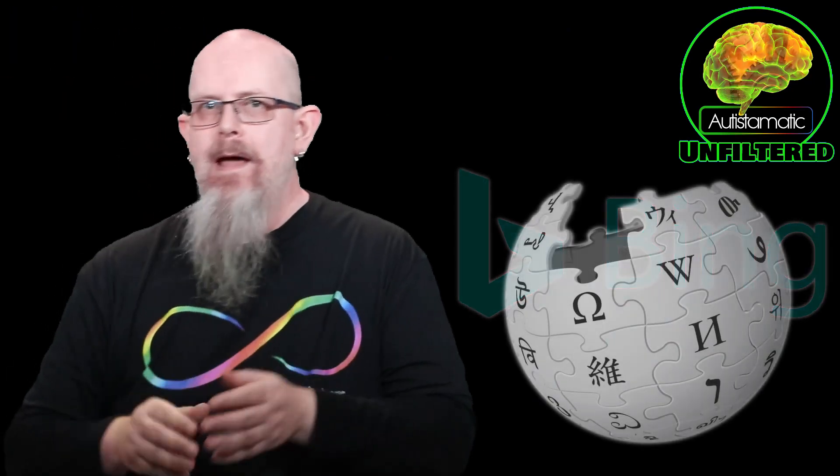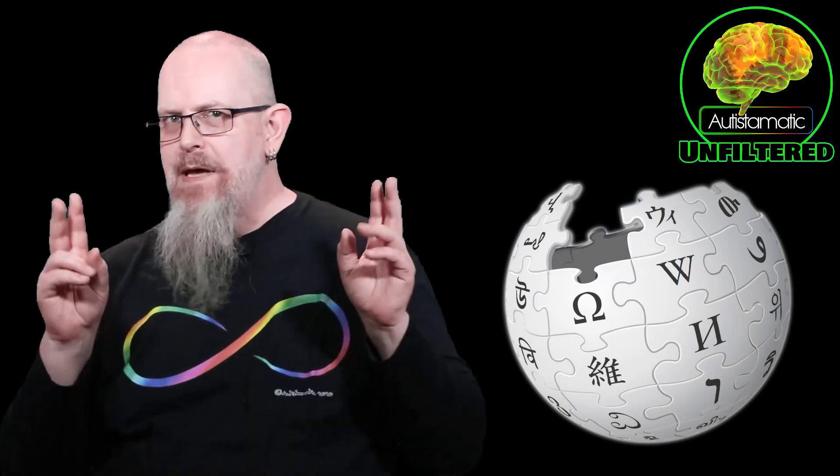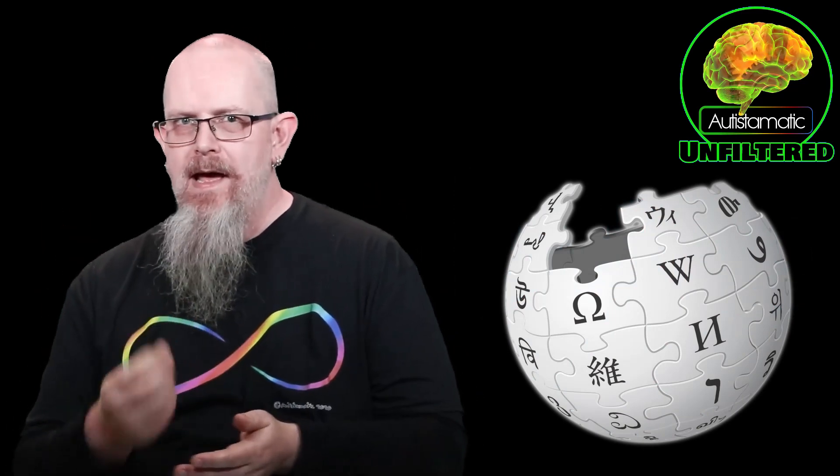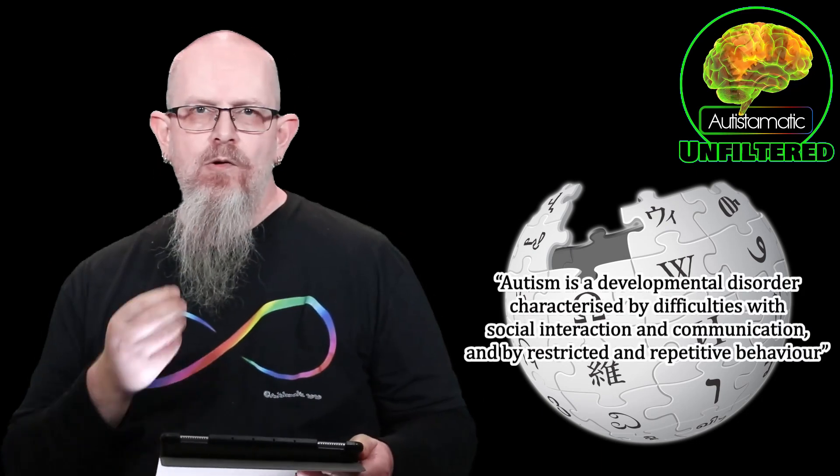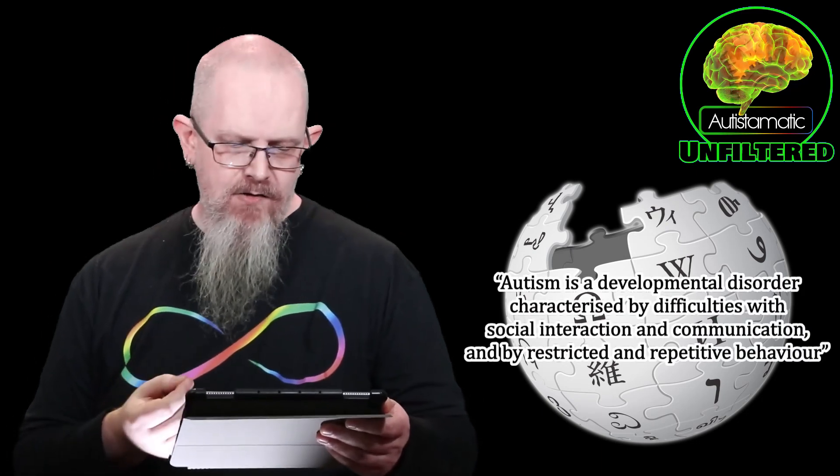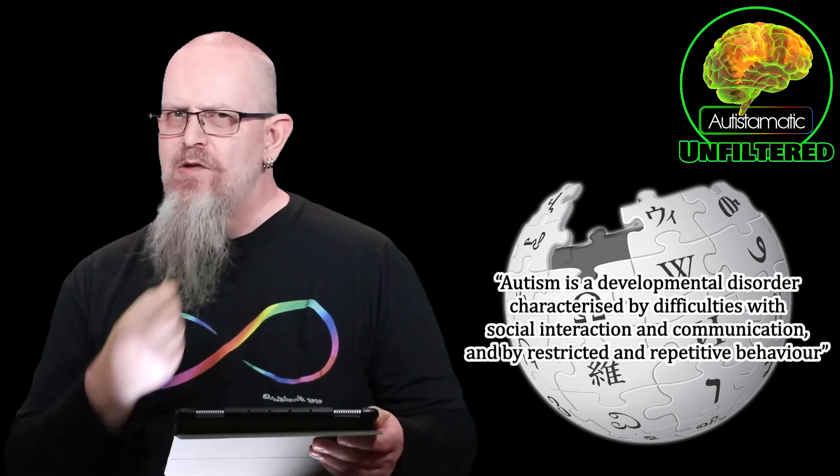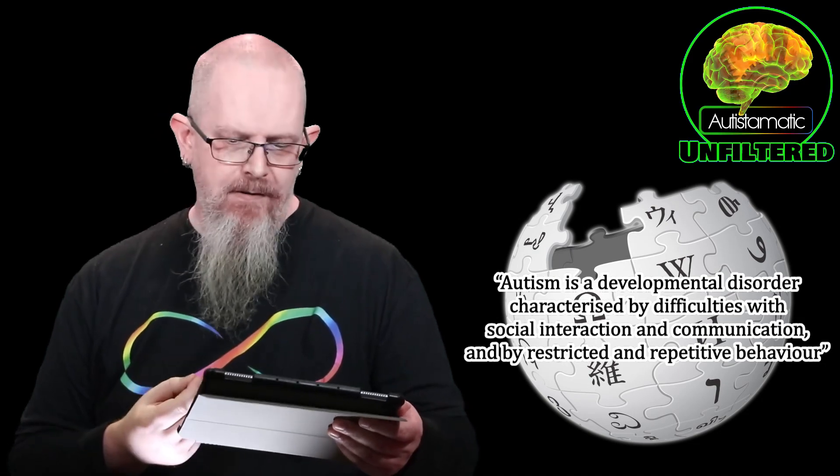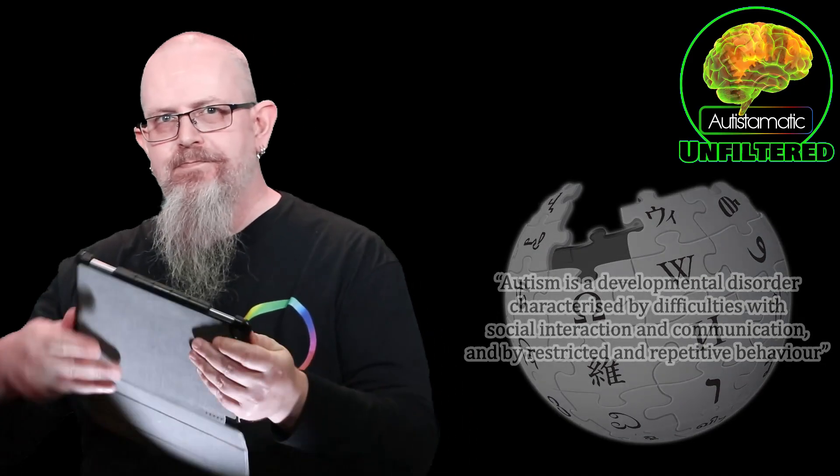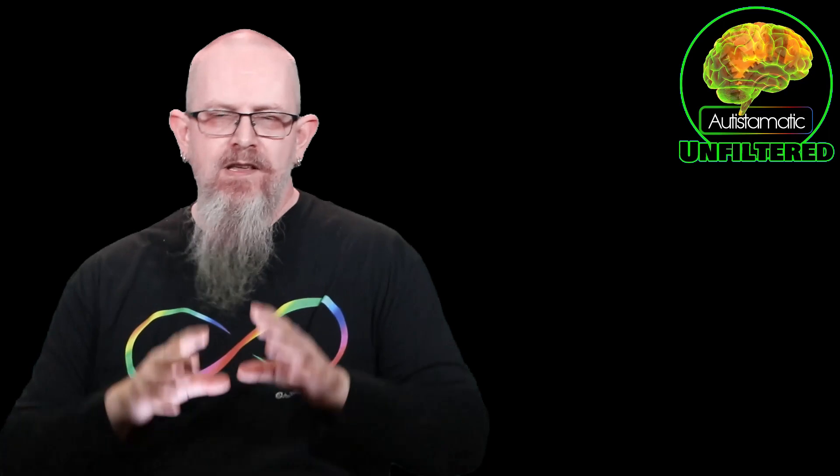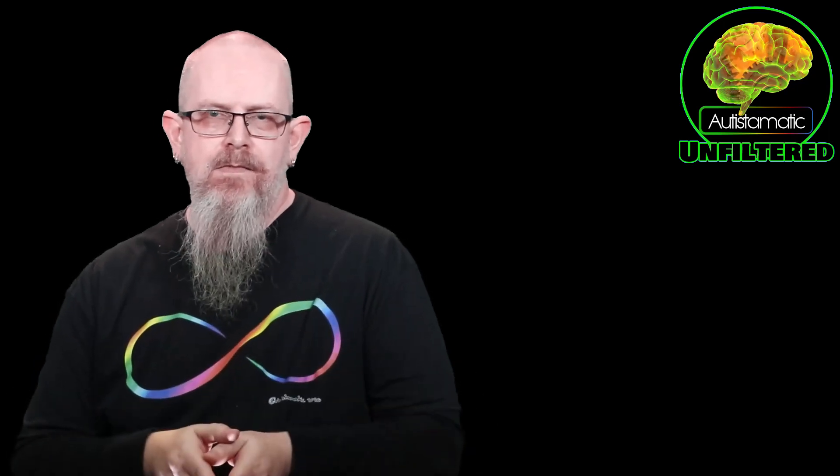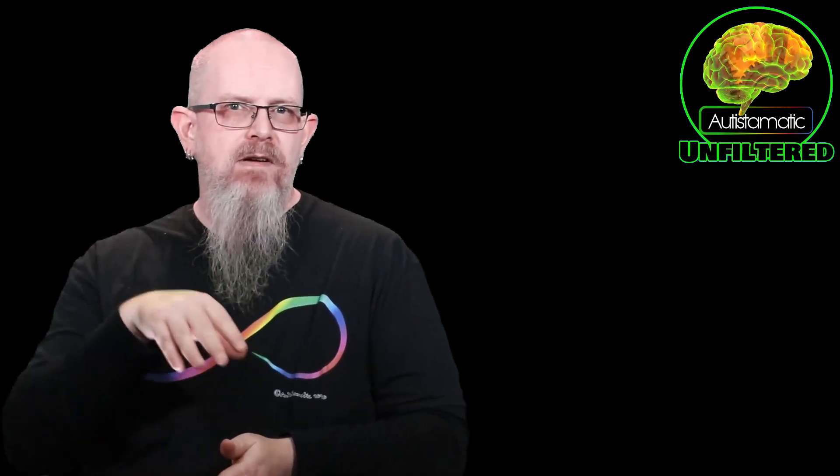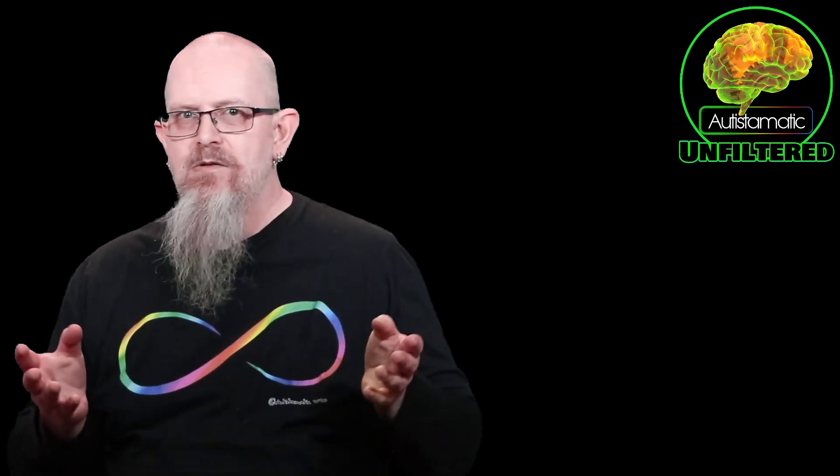What about Wikipedia then? As the People's Encyclopedia, perhaps we'll see something different there. Autism is a developmental disorder characterized by difficulties with social interaction and communication by restricted and repetitive behavior. So we're getting a pretty clear picture. Almost everywhere we look we're seeing the same themes. Bear in mind we're not delving very deep, but sadly neither do a lot of people.